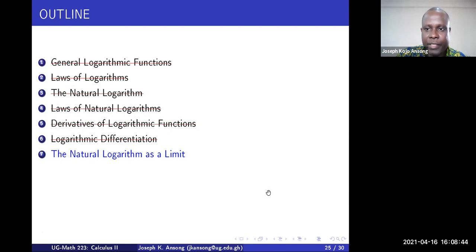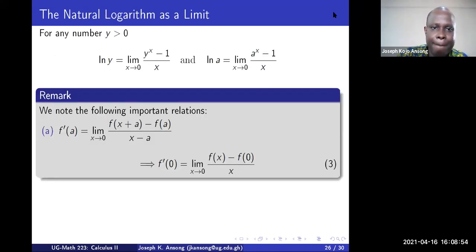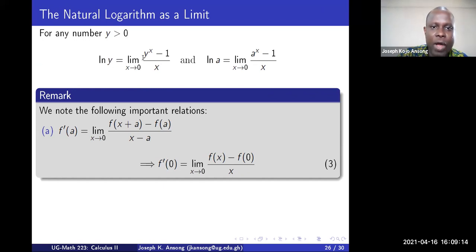We are done with logarithmic differentiation. Now we want to look at the natural logarithm as a limit, and that will be the end of this topic. For any real number y greater than zero, ln(y) is actually equal to the limit as x goes to zero of (y^x − 1)/x. If you replace y with any number a, you get ln(a) equals the limit as x goes to zero of (a^x − 1)/x.